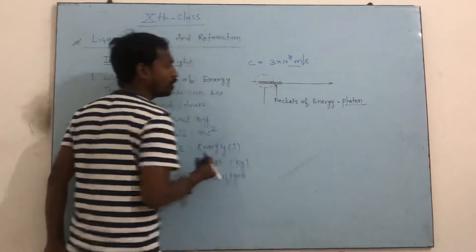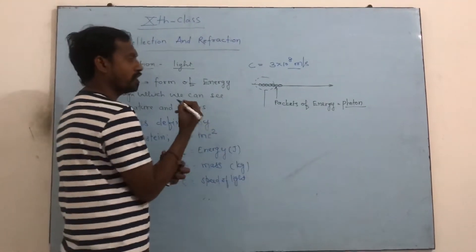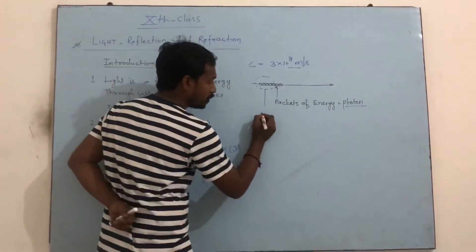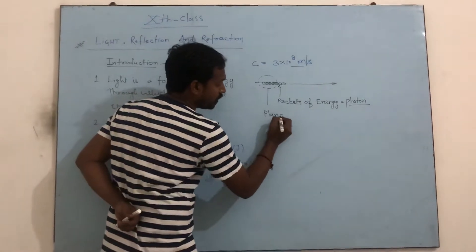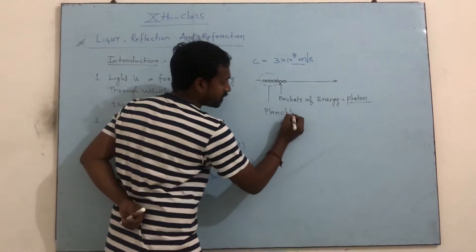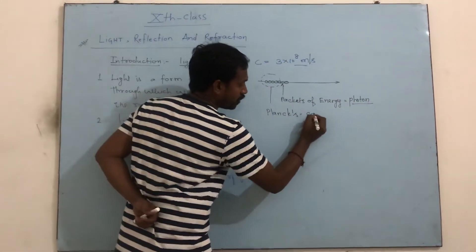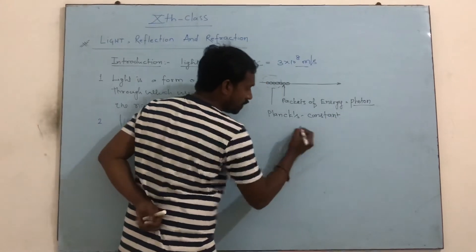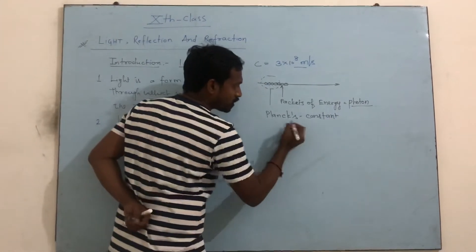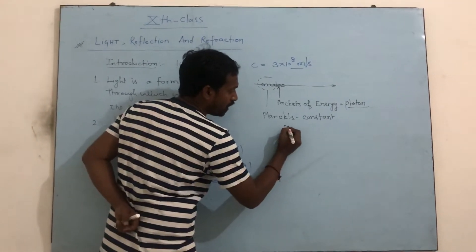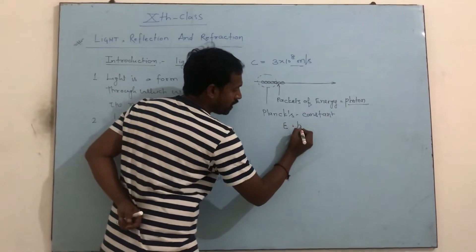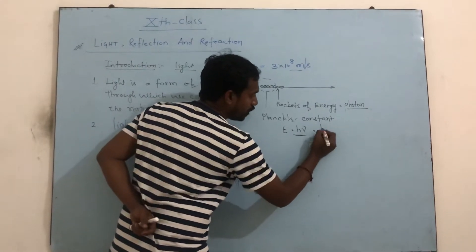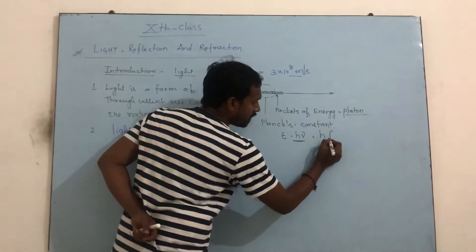That is a photon — packets of energy. What do we call a photon? It is associated with Planck's constant. Planck's constant is a constant value in physics.